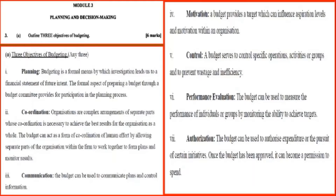Looking to coordination: organizations are complex arrangements of separate parts whose coordination is necessary to achieve the best results for the organization as a whole. The budget can act as a form of coordination of human effort, by allowing separate parts of the organization within the firm to work together to form plans and monitor situations.